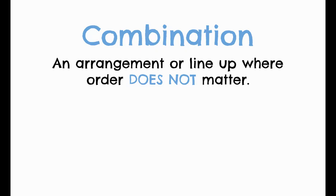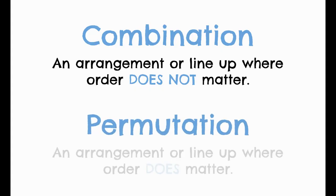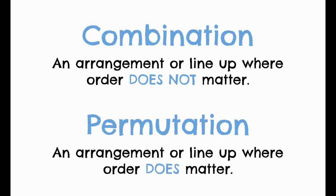Now let's get into our main topic, and we'll be using factorials within this topic. So what is a combination? It's an arrangement or lineup where the order does not matter. A permutation is an arrangement or lineup where the order does matter — that's the main difference. If it's just a random arrangement, it's a combination; if the order does matter, you need to use a permutation.